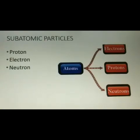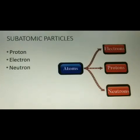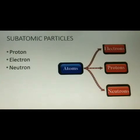The discoveries made during the 20th century proved that atoms of all elements are made up of smaller components like electron, proton, and neutron. An electron from a hydrogen atom is no different from an electron of a carbon atom. In the same manner, protons and neutrons of all elements have the same properties. These particles that make up the atom are said to be the subatomic particles — electron, proton, and neutron.